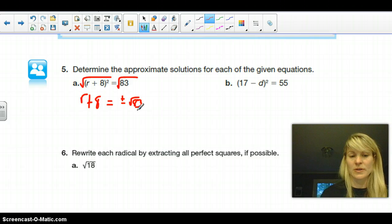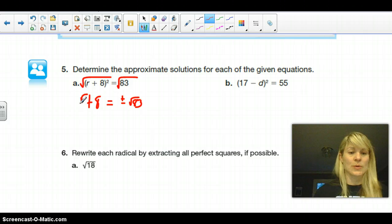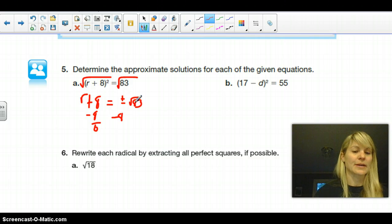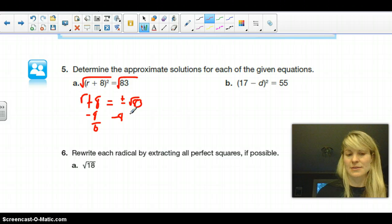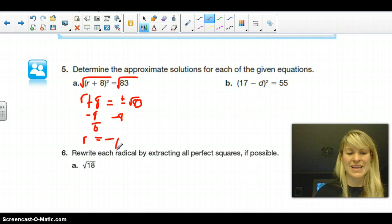Now, 83 isn't a perfect square. So I want to solve for r now. So I'm going to subtract 8. It gives me 0 here. And I put minus 8 here. Now, square roots are like like terms. You can't put them together unless they're exactly the same. So here I'm going to have r. I'm going to bring down my equals. It's going to be negative 8 plus or minus the square root of 83.